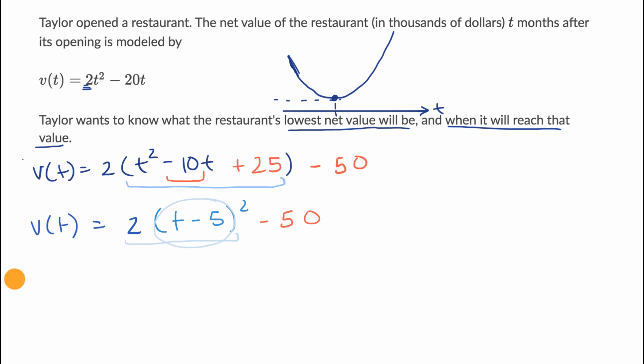If we say V(5) = 2(5 - 5)² - 50, notice this whole thing becomes zero. So V(5) = -50. That is when we hit our low point in terms of the net value of the restaurant.